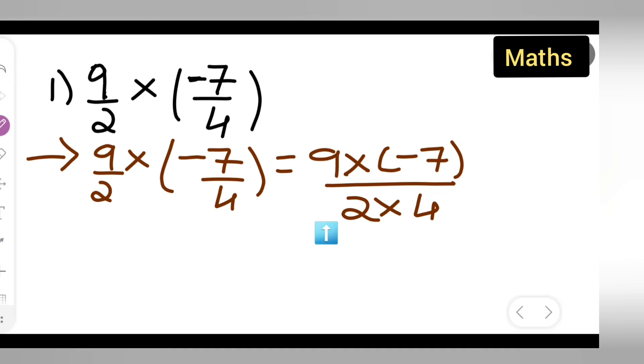So write down minus 63 upon what is your answer? 2 times 4, you will get 8.